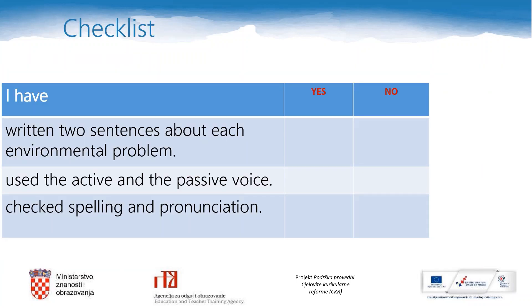Well done. Now we can go through this checklist to see if you have included all required elements into the task. Please check if you have written two sentences about each environmental problem, if you have used both active and passive voice, and if you have checked spelling and pronunciation. If not, look at your sentences again and finish the task.